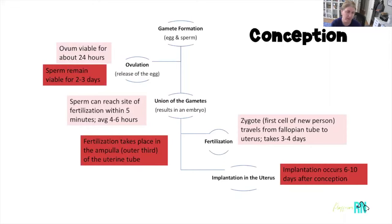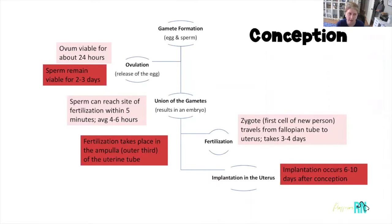When we talk about that egg released from the ovaries, it is viable for about 24 hours outside of the ovary. Sperm is viable in the female body for about two to three days, so 48 to 72 hours. Once that egg and sperm do meet, we call that fertilization, and that happens in the fallopian tube — specifically the outer third of the fallopian tube, which is called the ampulla. Sperm can reach the egg within about five minutes, but the average time is about four to six hours.